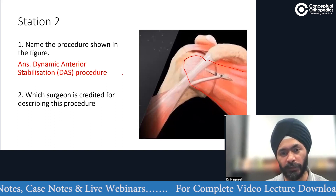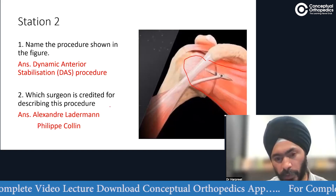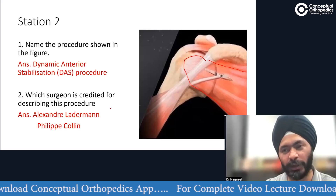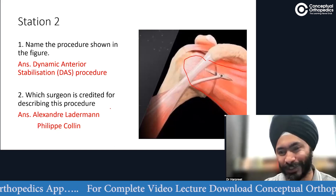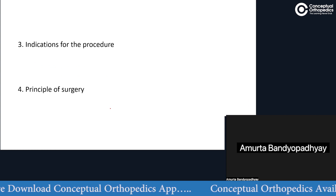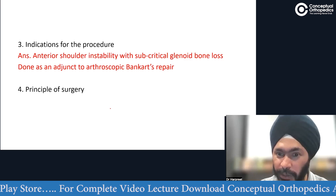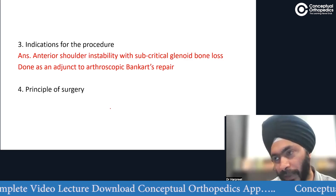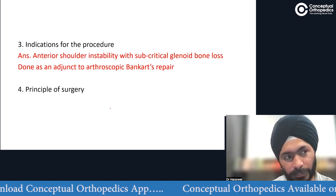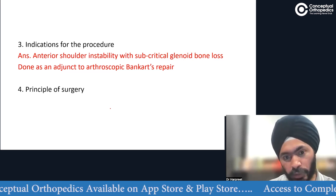Who described this procedure? This very recently described procedure was described by two European surgeons — Alexander Laedermann and Philip Collin. What is the indication of this procedure? Dynamic anterior stabilization — anterior instability. It is done for anterior instability, but not all patients — specifically anterior instability with subcritical glenoid bone loss. Indications are still being refined, but this is not a standalone procedure.